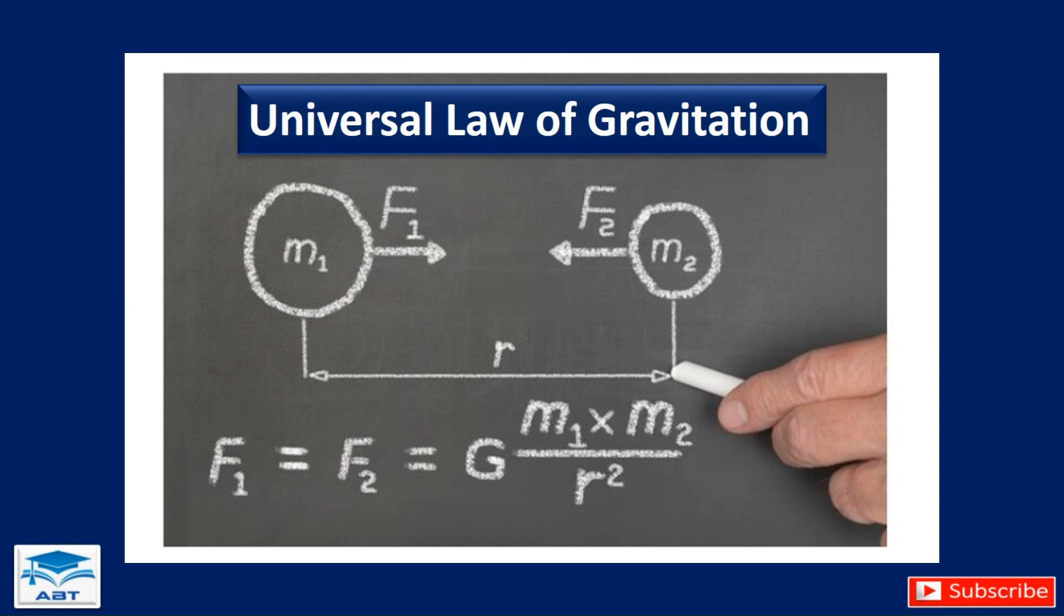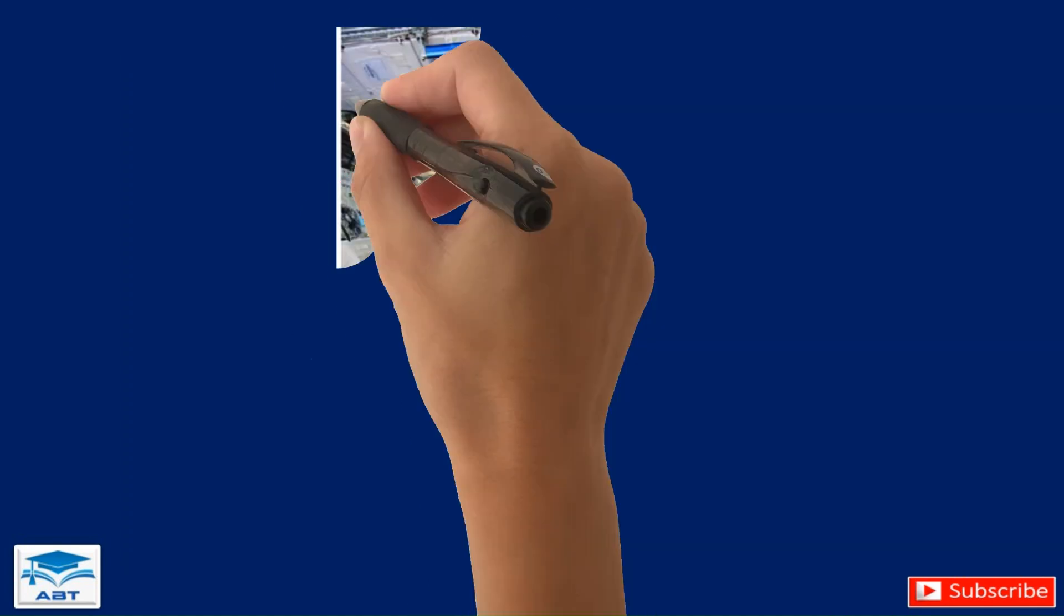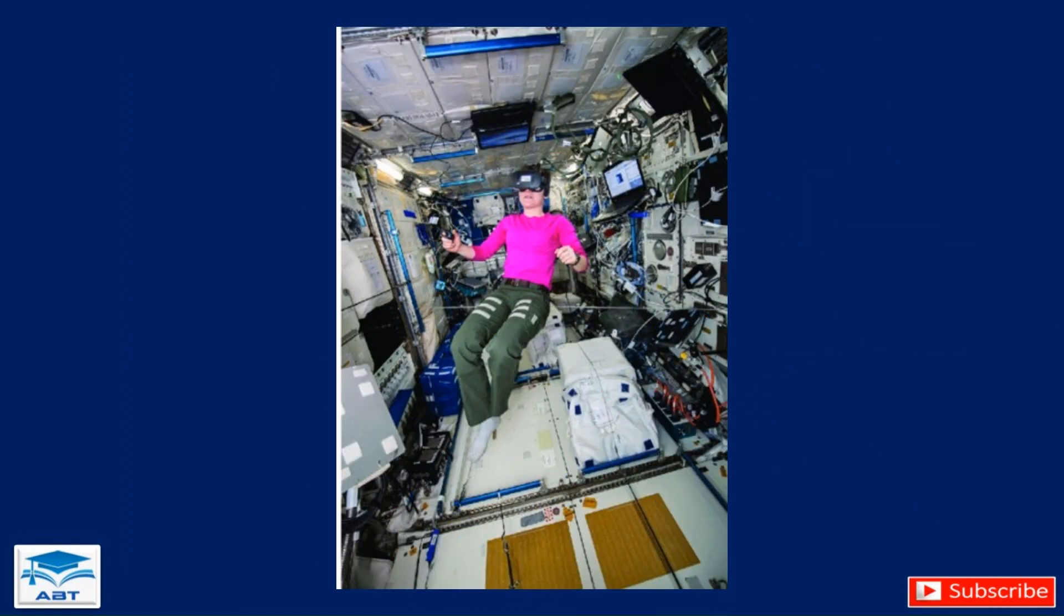In space, gravity still exists but it's much weaker far from Earth. That's why astronauts appear to float around in the International Space Station. They're not completely weightless—they're in free fall, constantly falling toward Earth but also moving forward, which keeps them in orbit.